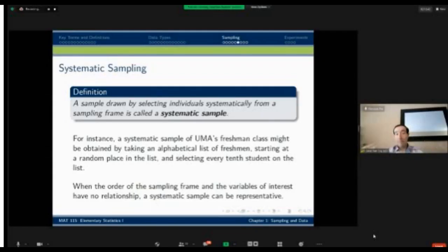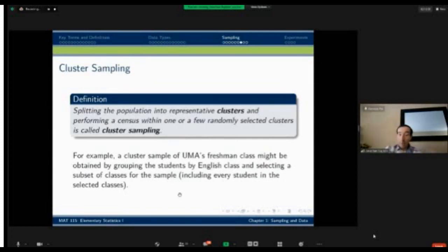As long as there's no connection between the order of my sampling frame and the variable I want to study, then a systematic sample can be representative and it's often a reasonable way to do it. Another way to think about this is looking at a phone book, for instance. If everyone's listed in the phone book, I could just randomly select a starting point and then pick how many pages to pass to find the next person I call. That would be a systematic sample.